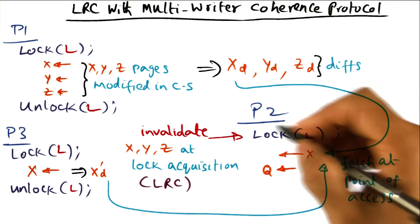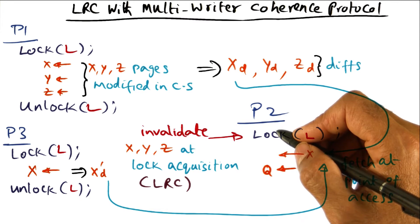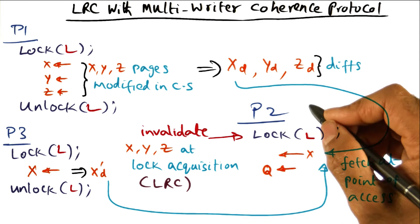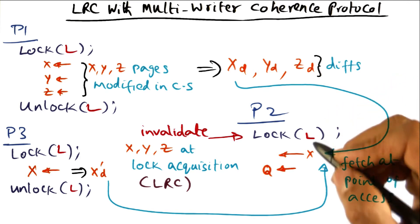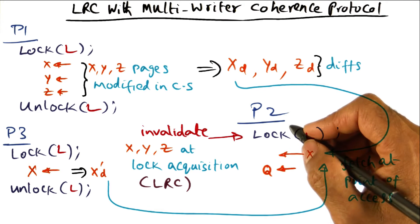So it is conceivable that while all of this was going on, there is another processor, let's say P4. And a thread that is running on that processor P4 got a completely different lock, let's say L2. And it is accessing some data structure that happens to be in the same page x. This is perfectly fine.